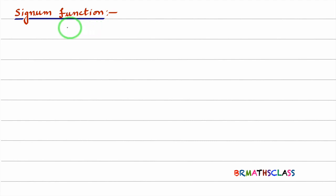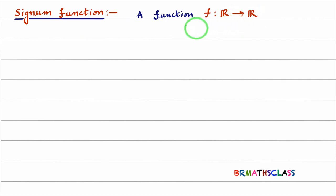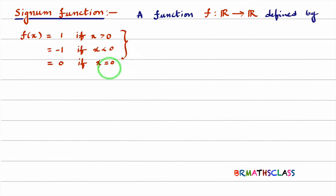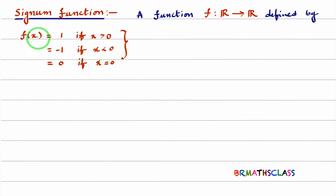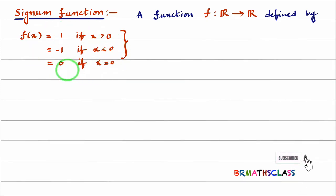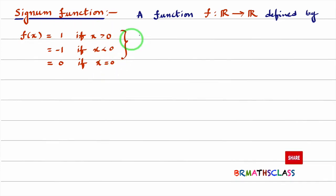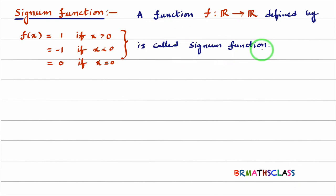First, we will learn the definition of signum function. A function f from R to R — it is a function from the set of all real numbers to real numbers. The function is defined like this: f is 1 when x is greater than 0, f is minus 1 when x is less than 0, and f is 0 when x equals 0. A function f from R to R defined like this is called the signum function.